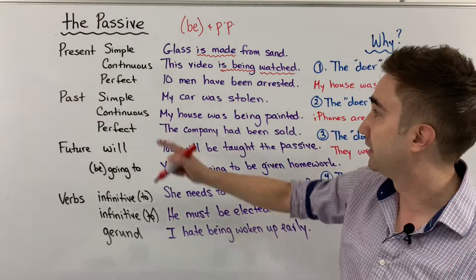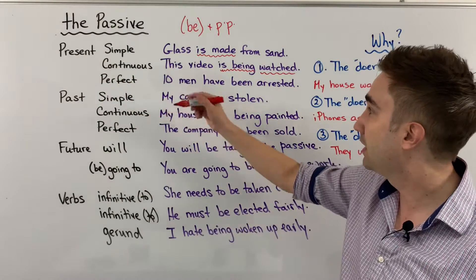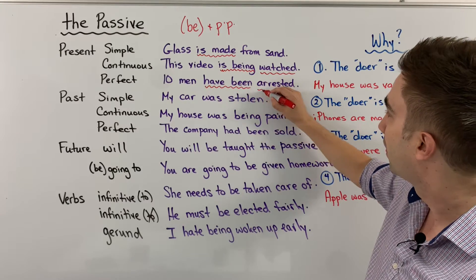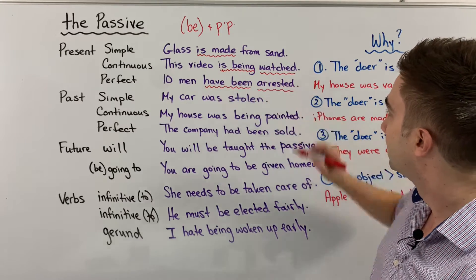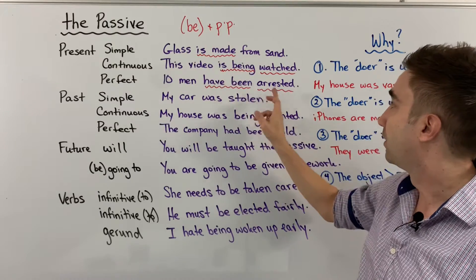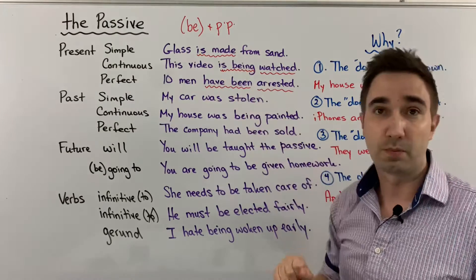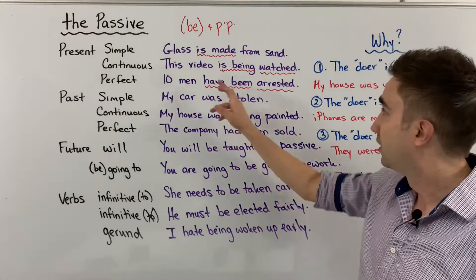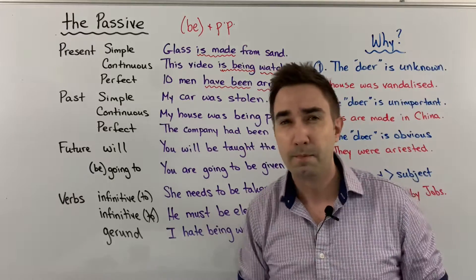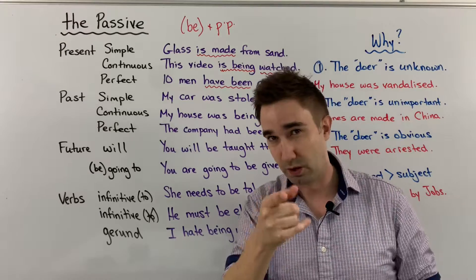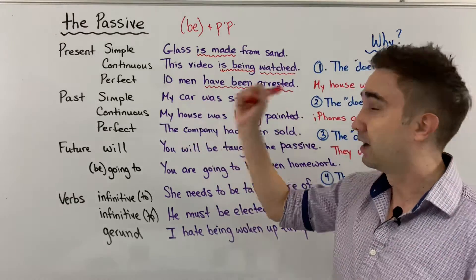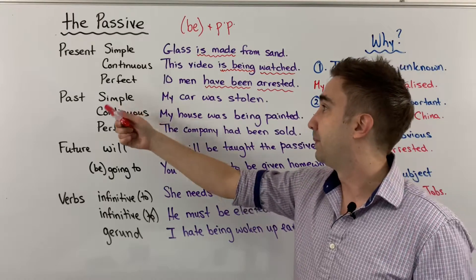For present perfect, I can say: ten men have been arrested. 'Have been' — that's our be. 'Arrested' is our past participle. So: have been arrested. Most likely by the police, and we'll talk about that at the end of the video.